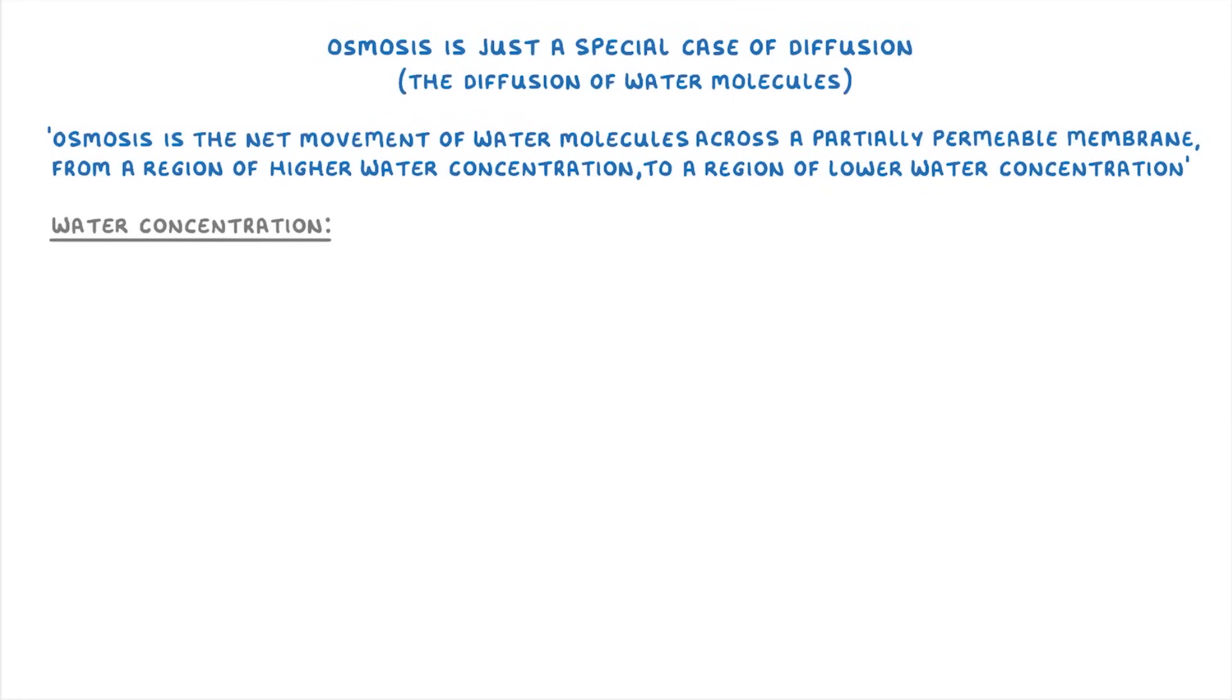The term water concentration can be a bit confusing, so let's just break down what it means. Basically, all we mean by water concentration is the amount of water as compared to the other molecules like sugars or salts that are dissolved in that water. And we call these dissolved molecules solutes.